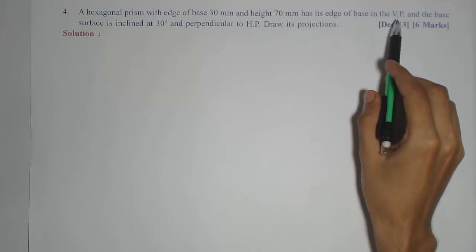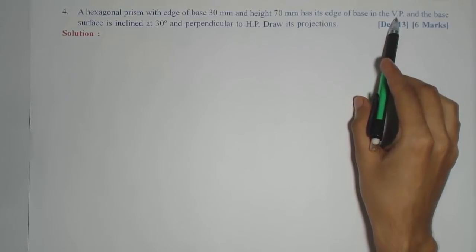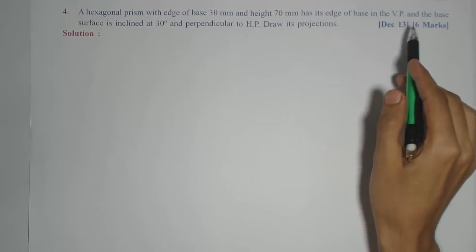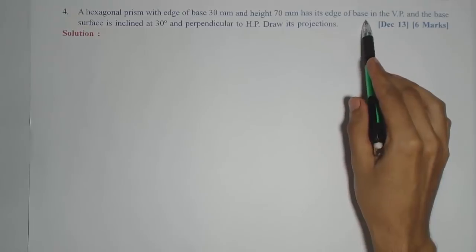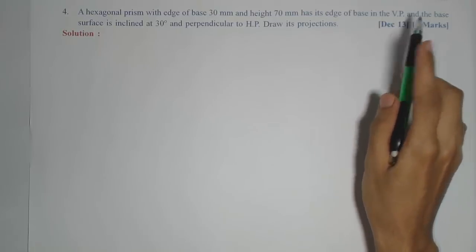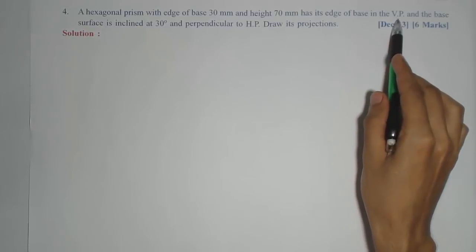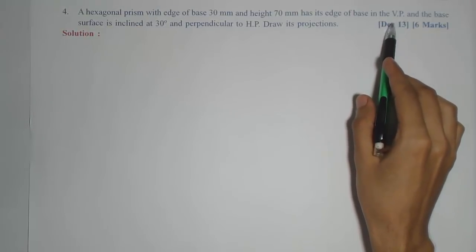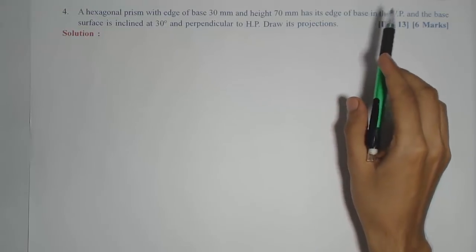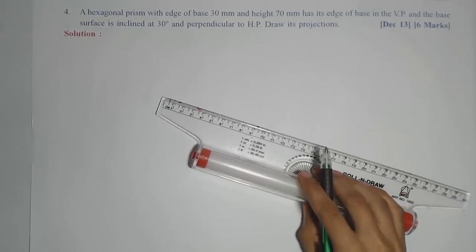Here, compared to the previous problem, the base edge is given in the VP. So initially my assumption should be that the entire base is lying in the VP, so that the base — which is a hexagon — can be seen in the front view. In the previous problem when the base edge was lying in the HP, we assumed the entire base was kept on the HP, so we could see the true shape in the top view. But here, since the base is in the VP, I will get the true shape of the base — a hexagon — in the front view. So I need to draw that true shape above the XY line. We will start with the hexagonal base.